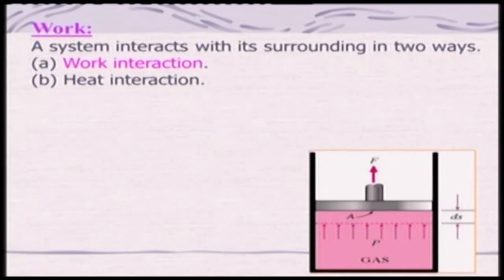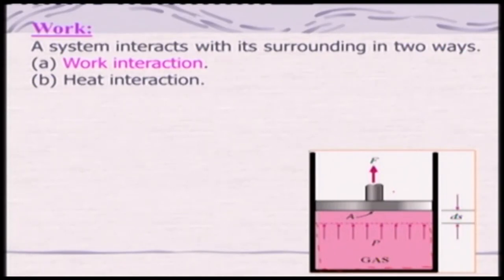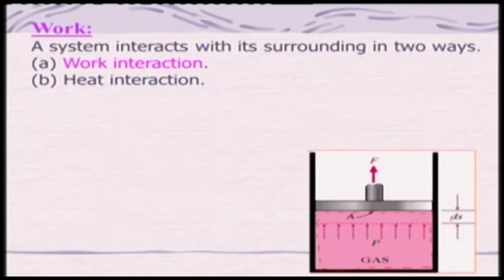The system here is balanced by a force. If this force is reduced by delta F, the piston — which was earlier at its initial position — will move and the system boundary will increase. This is a movable boundary, and there is a displacement dS.